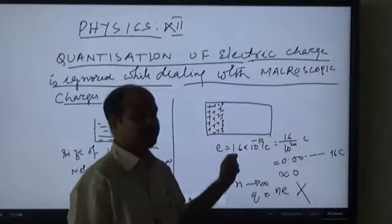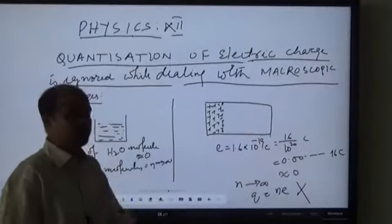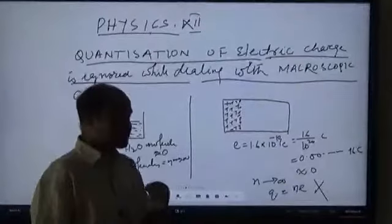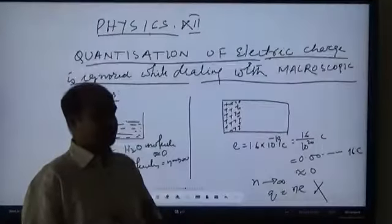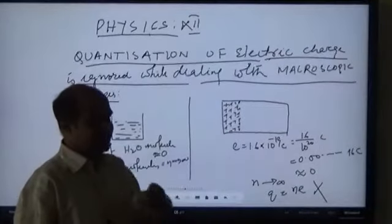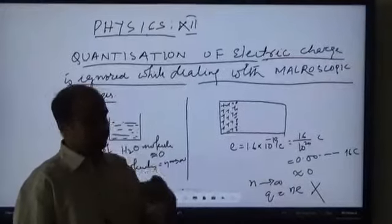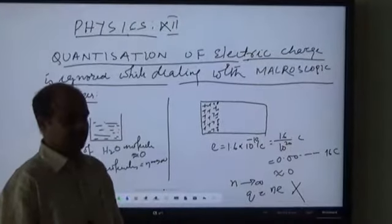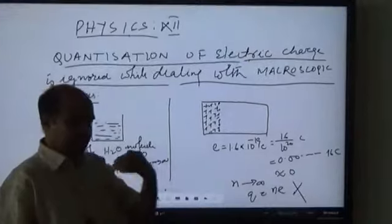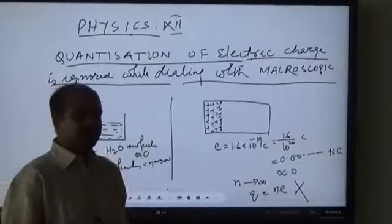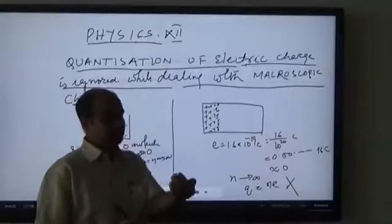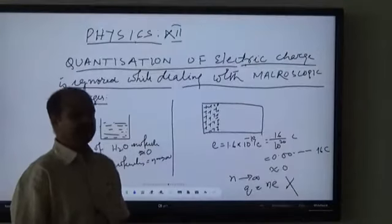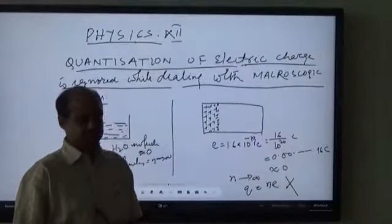Hence we treat the electric charge to be continuous when we deal with large-scale charges. By the term 'large-scale charges' we mean macroscopic charges. Macroscopic charges are those where the number of charges is more than a thousand, and microscopic charges are those where the number is up to a few hundreds.